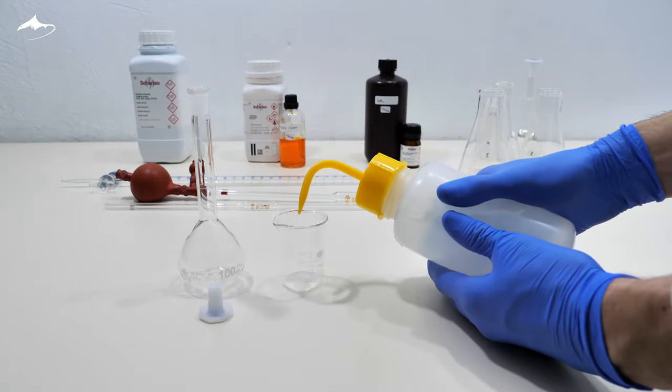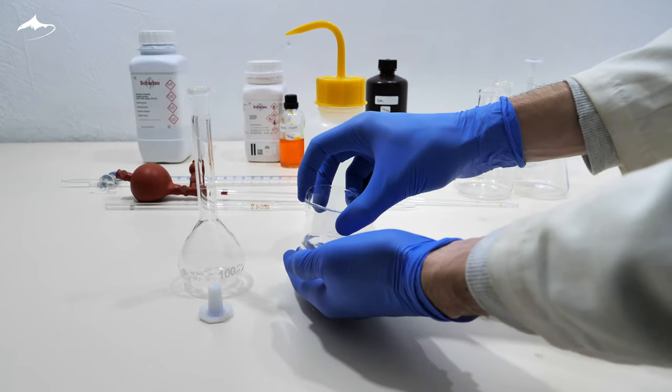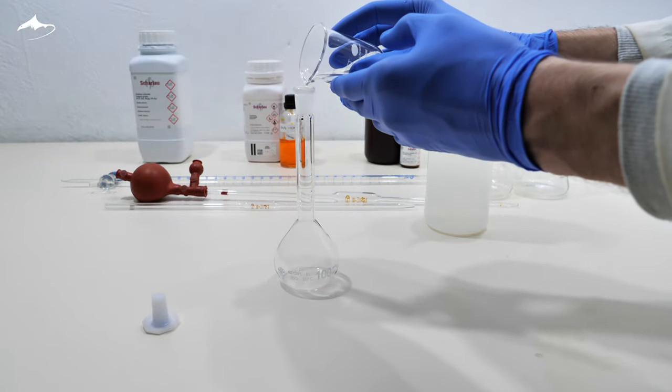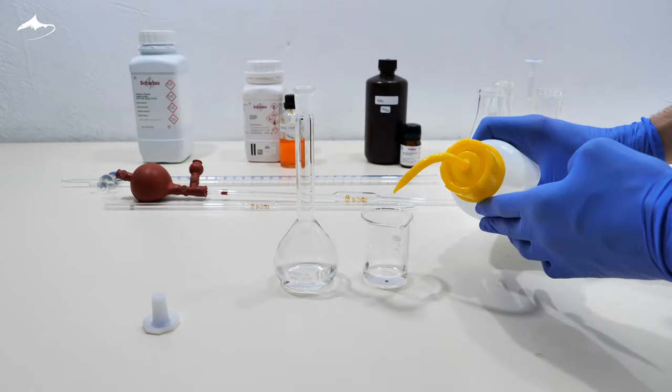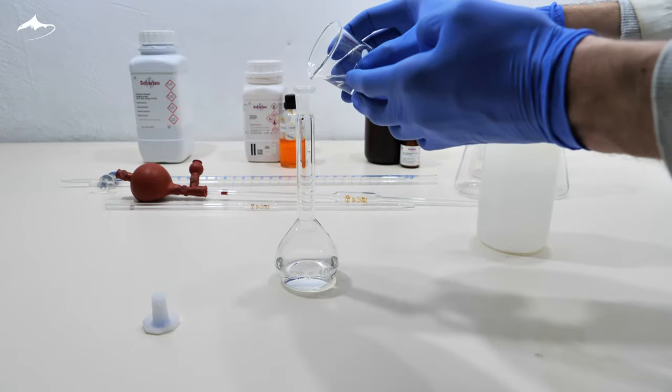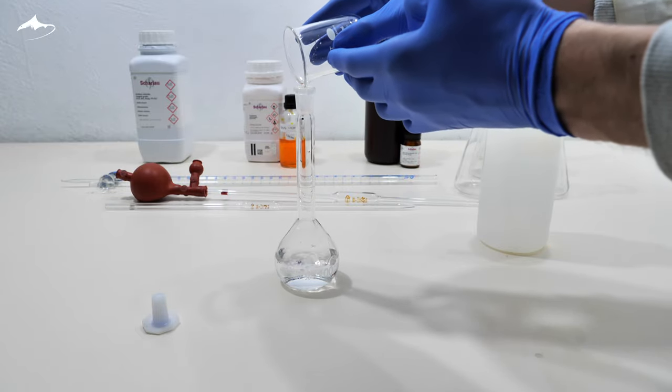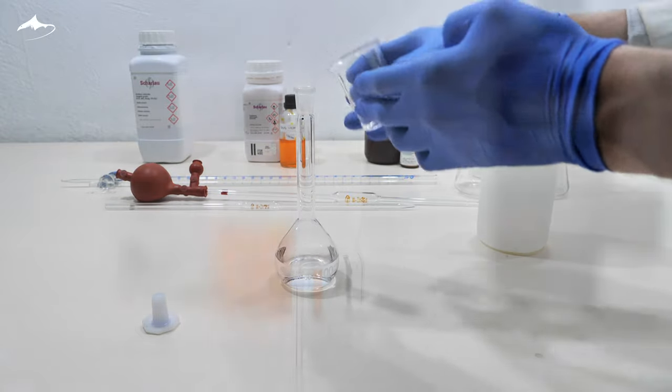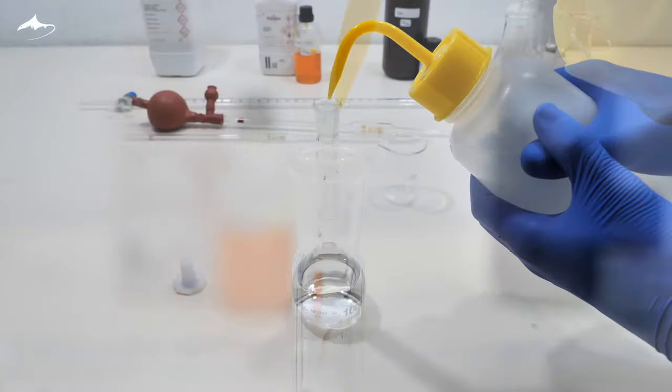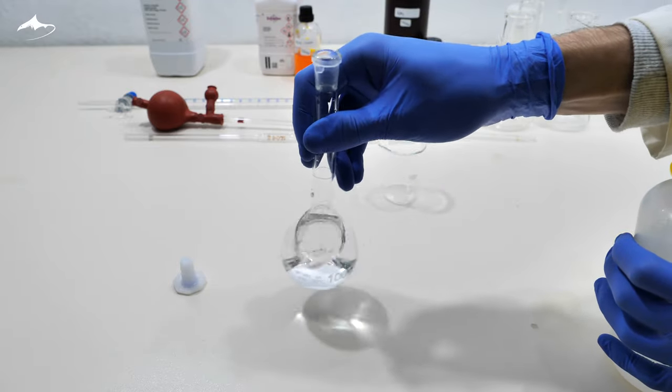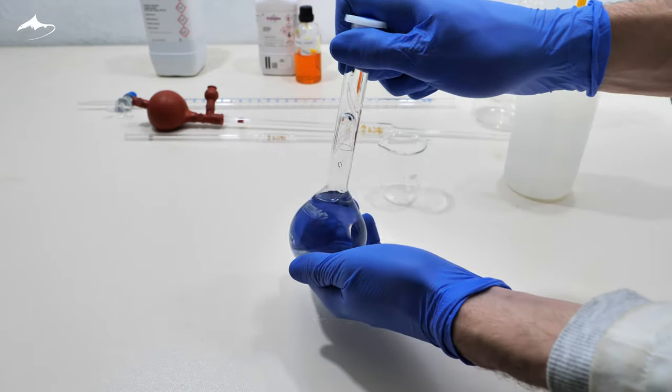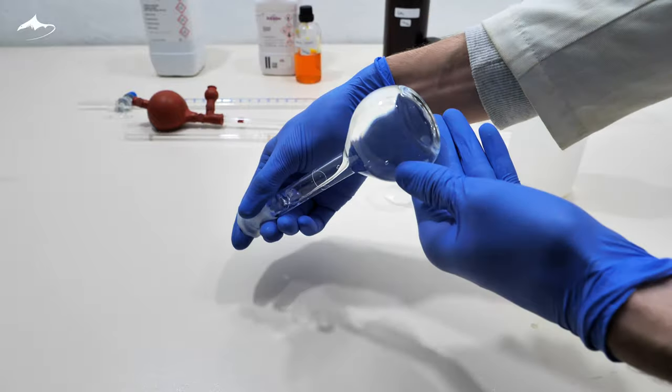Once weighed, the salt is dissolved in distilled water and quantitatively transferred into a volumetric flask. To achieve this, the beaker is rinsed several times to ensure all the sodium chloride is transferred. This is mandatory when preparing standard solutions, as this step is a source of analytical errors. After that, the flask is filled with distilled water up to the ring marking. Then, it is inverted several times to completely homogenize the solution inside.